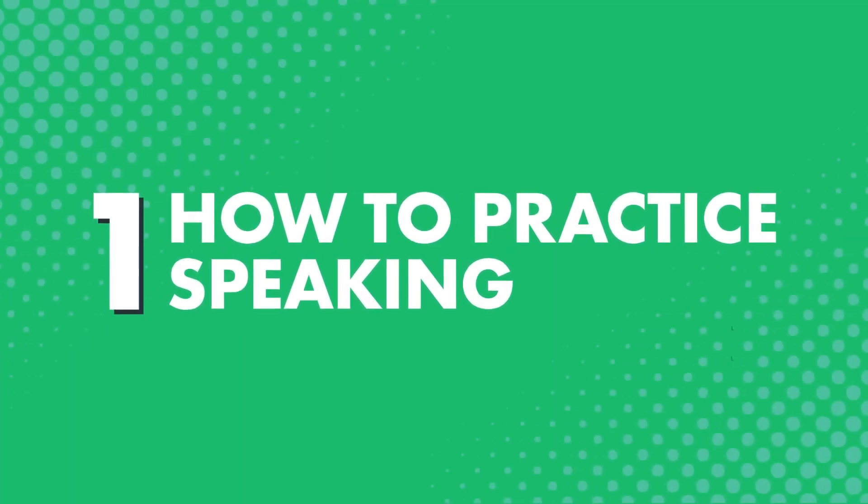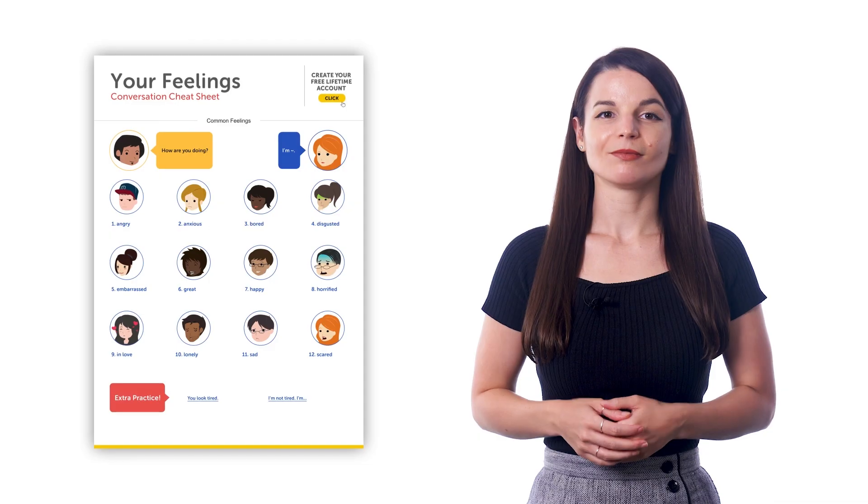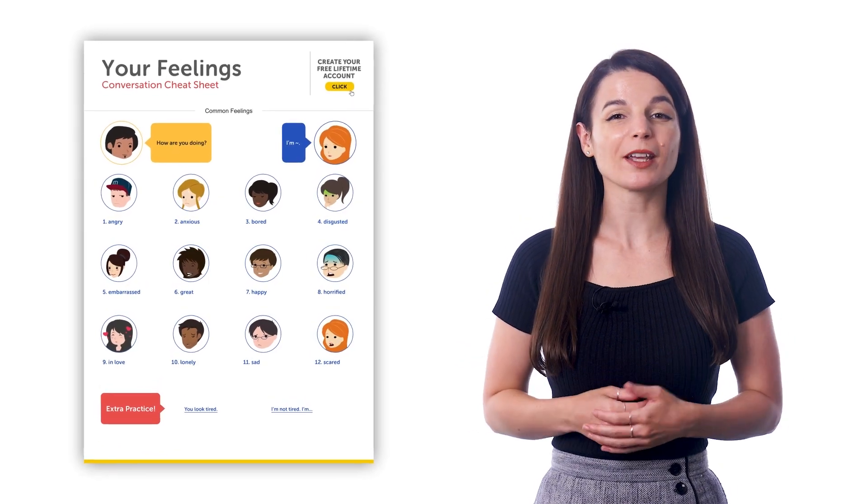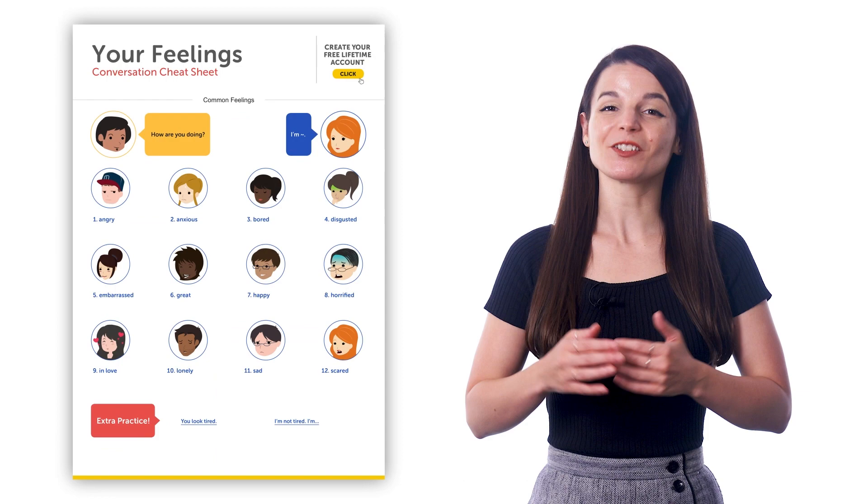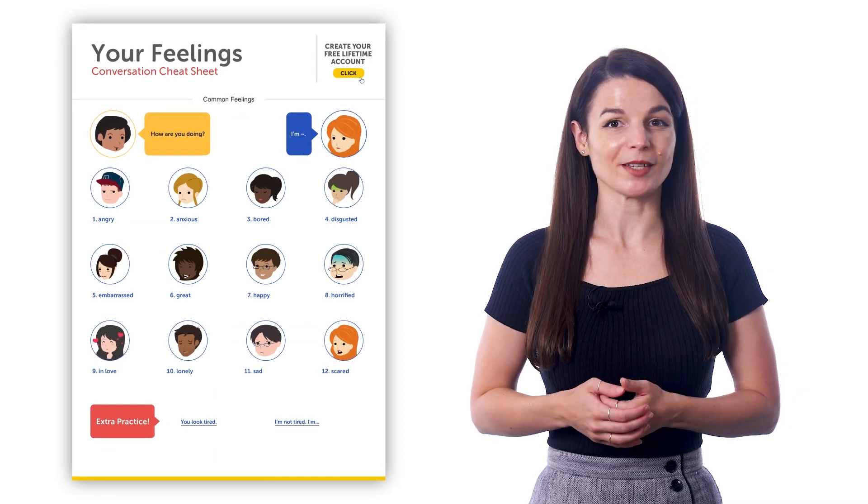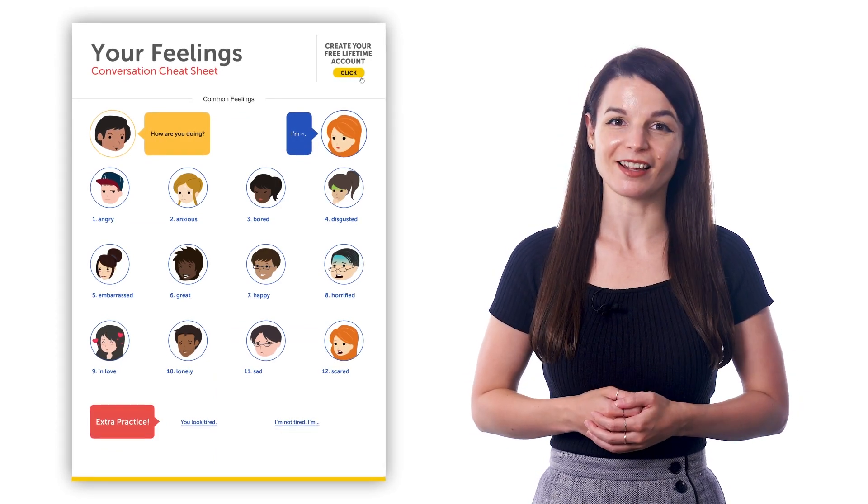One, how to practice speaking. Every cheat sheet comes with a quick, practical dialogue that you can use when you chat with native speakers. But you can also practice speaking ahead of time. Just read the dialogues out loud a few times a day and you'll get used to saying these lines. Reading out loud is one tried and tested tactic for improving your speaking skills. And when you get a chance to speak with a native speaker, you'll be able to say these lines naturally.